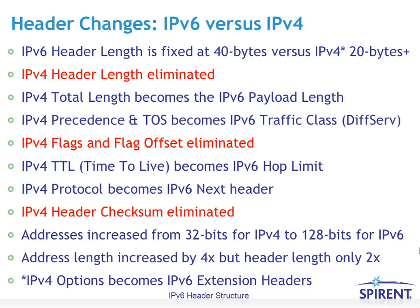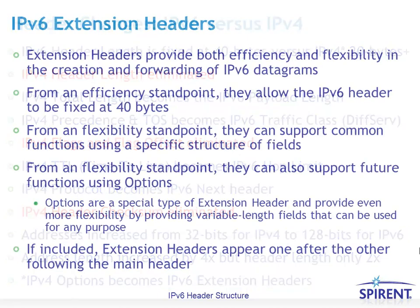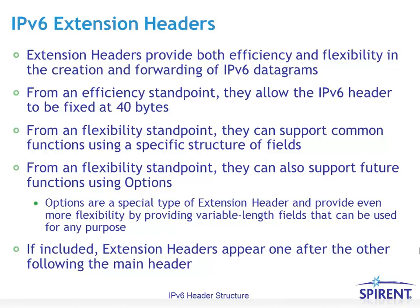Overall, the address length increased by 4 times but the header length only doubled. IPv6 extension headers are handled more efficiently and give more flexibility than the old IPv4 options did. The fixed 40-byte IPv6 header supports more common functions using a specific structure of fields, and future functions can be supported using TLV-encoded options — type length value encoded — providing more variable information with IPv6 extension headers.